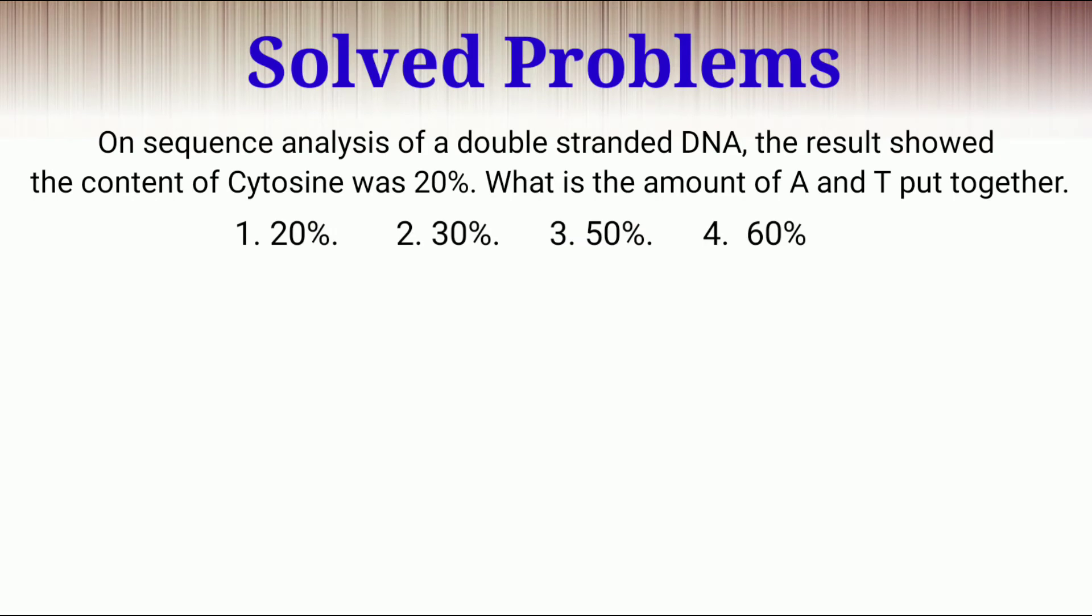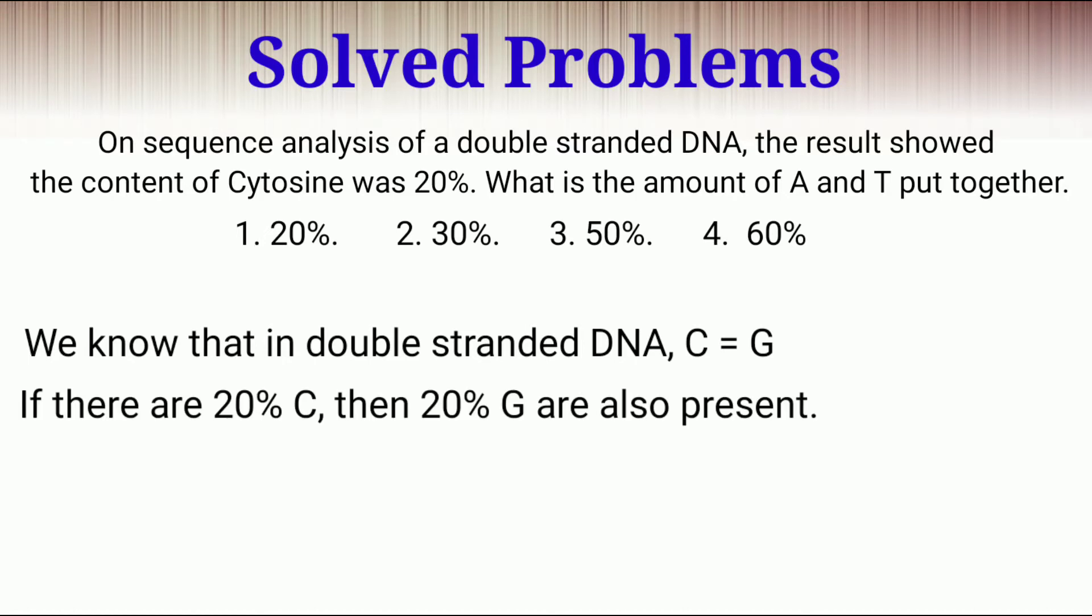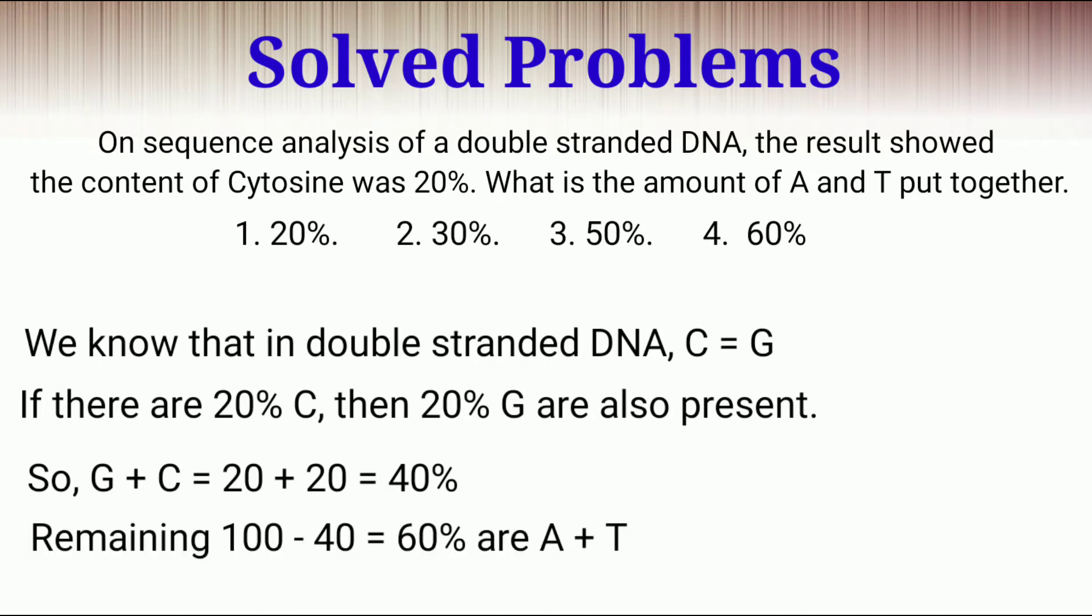In this numerical problem that appears in this exam, the percentage of cytosine is 20% in a double-stranded DNA and you have to calculate the percentage of adenosine plus thymine. We know that in DNA, guanosine is always equals to cytosine. So if cytosine is 20%, then guanosine will be 20%. So out of 100, 20 plus 20 or 40% is guanosine plus cytosine. So 100 minus 40, that is 60% is adenosine plus thymine.